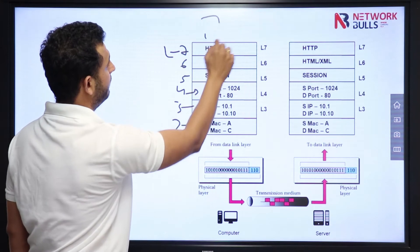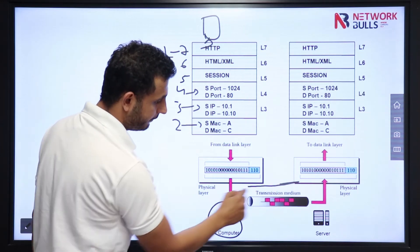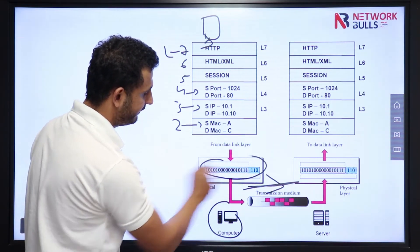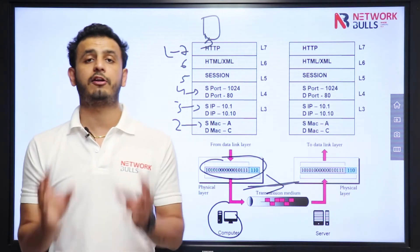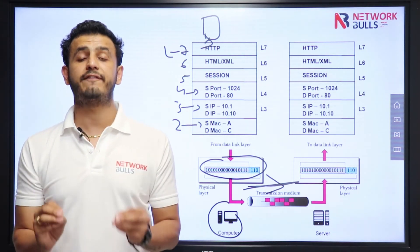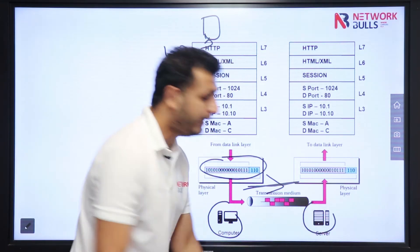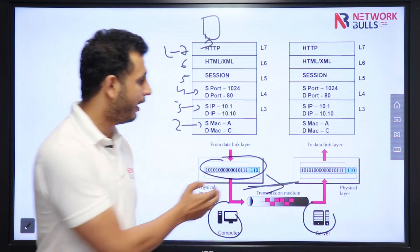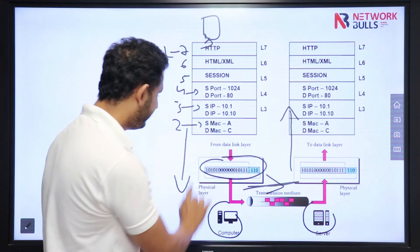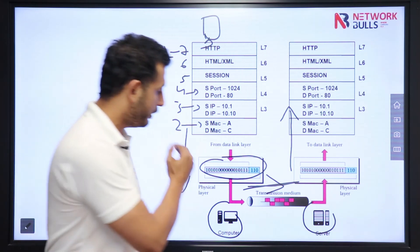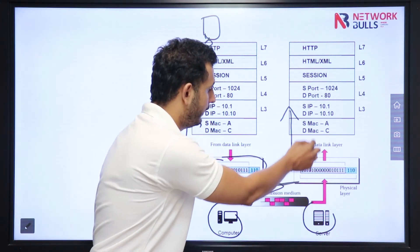My device, my user here, will send this information on the medium in the form of bits. Who is responsible for sending this information onto the medium? Physical Layer is responsible for sending all information onto the medium. On the receiver side, Physical Layer is responsible for receiving all the bits and giving that information to the upper layer. On the sending side, Physical Layer sends information onto the medium; on the receiving side, Physical Layer collects those bits and gives it to the upper layer.